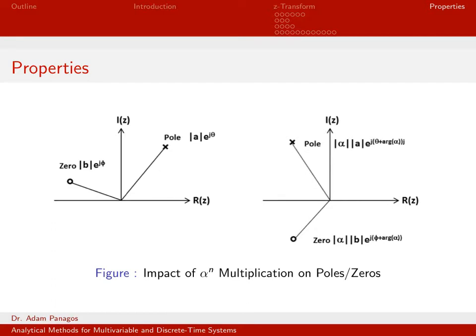So those are the first four properties of the Z-transform: linearity, time reversal, time shift, and the exponential sequence property. In the next video, we'll talk about the next four properties of the Z-transform.